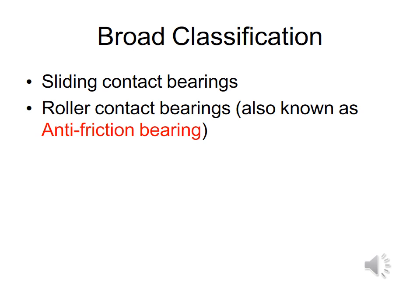In ordinary sliding bearings, starting from rest involves metal-to-metal contact and a high coefficient of friction. An outstanding advantage of rolling contact bearings over sliding contact bearings is their low starting friction. Sliding contact bearings have high friction, whereas rolling contact bearings have low starting friction. Due to this low friction, rolling contact bearings are called anti-friction bearings.